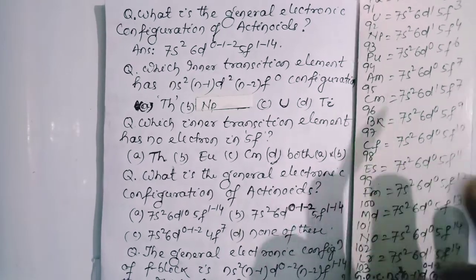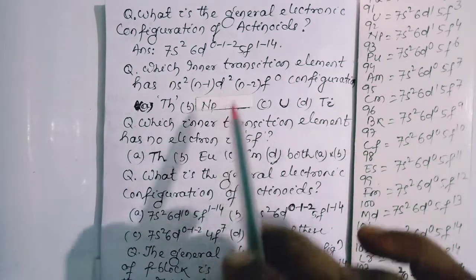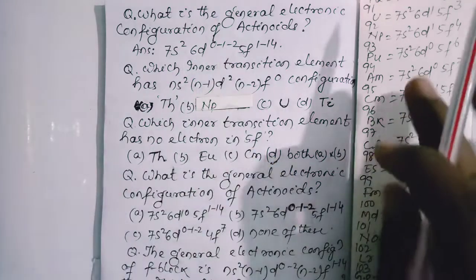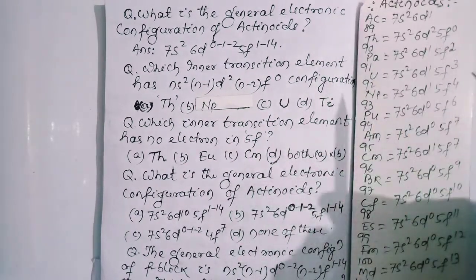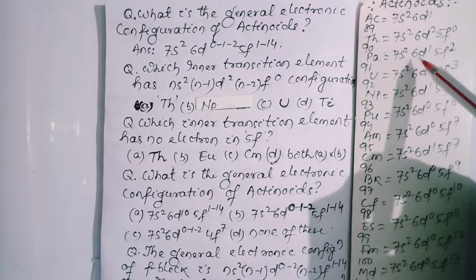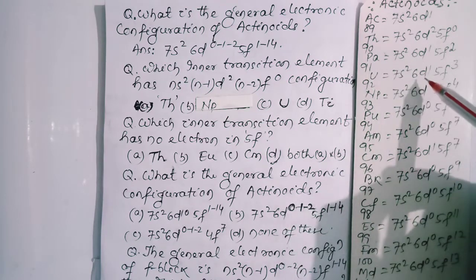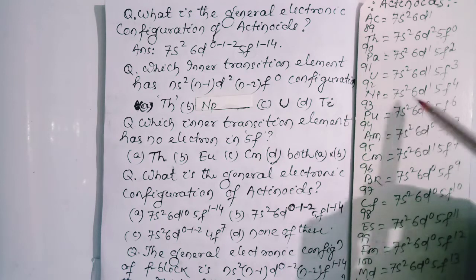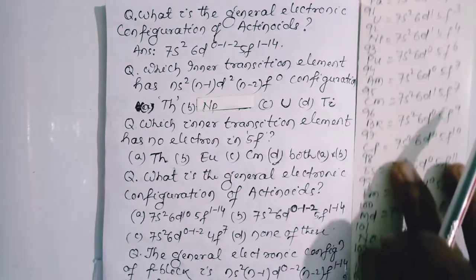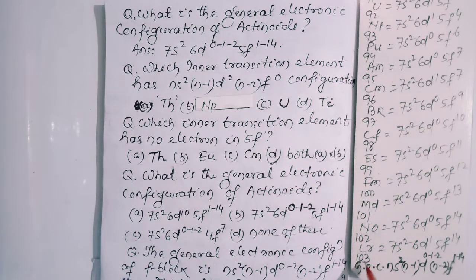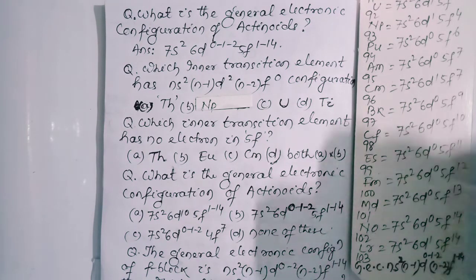And 6d¹ is for Pa-91, Uranium-92, Neptunium-93, Curium-96, then Lawrencium-103. They have 6d¹ configuration.